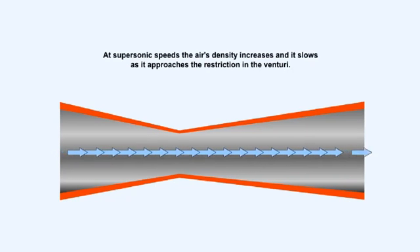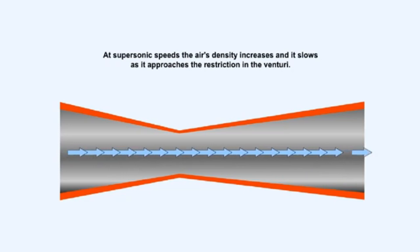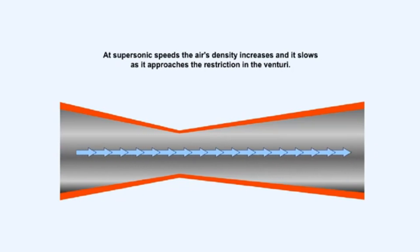However, at supersonic speed pressure waves cannot move out ahead of the air and cause it to accelerate. Therefore the air becomes more dense and slows down. This is still in accordance with Bernoulli's equation, which tells us that if the static pressure increases and the density increases then the velocity must decrease in order to keep the total energy in the airflow constant. To most people this tendency of supersonic airflow is more intuitive than what happens in subsonic airflow.